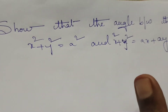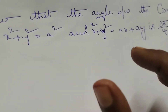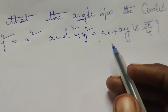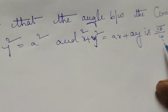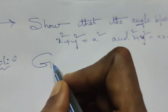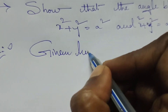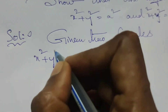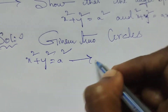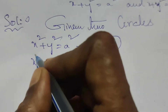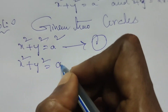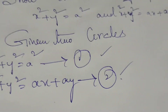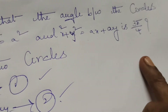Here, find out the angle between the two circles. Also, given that the angle is 3π/4. In these two circles, it is proved that the angle is 3π/4. First of all, write the given two circles. Circle 1: x² + y² = a² — this is equation number 1. Another circle: x² + y² = ax + ay — this is equation number 2. Here, prove that the angle between these two circles is 3π/4.